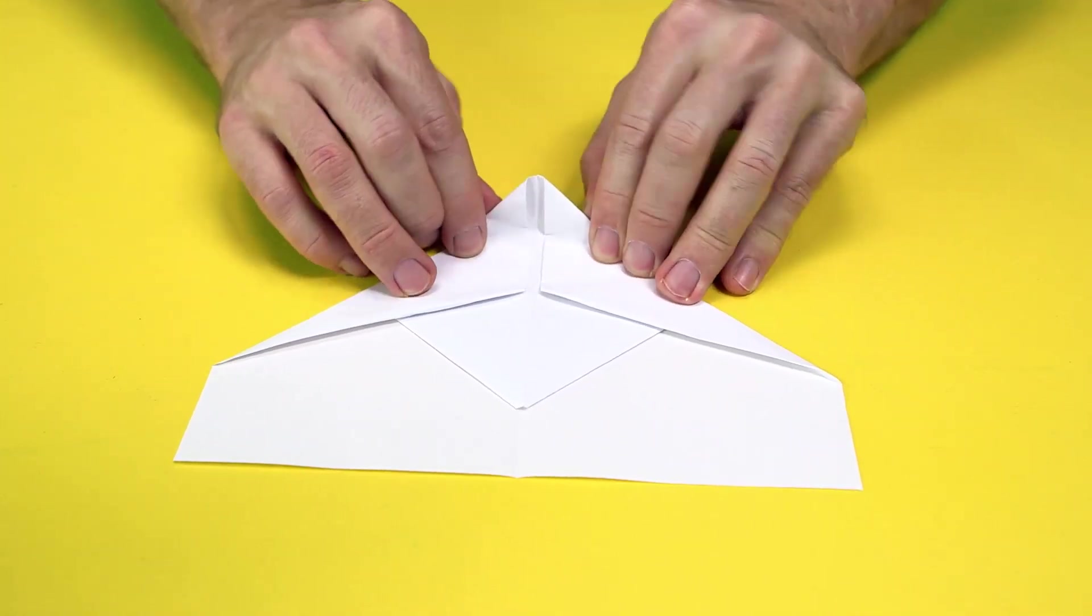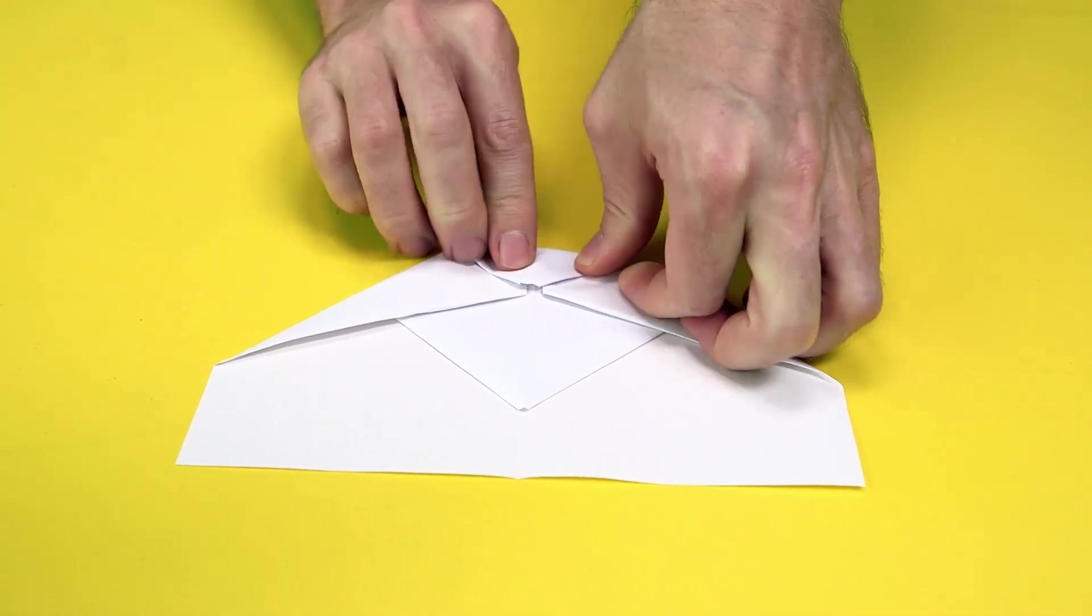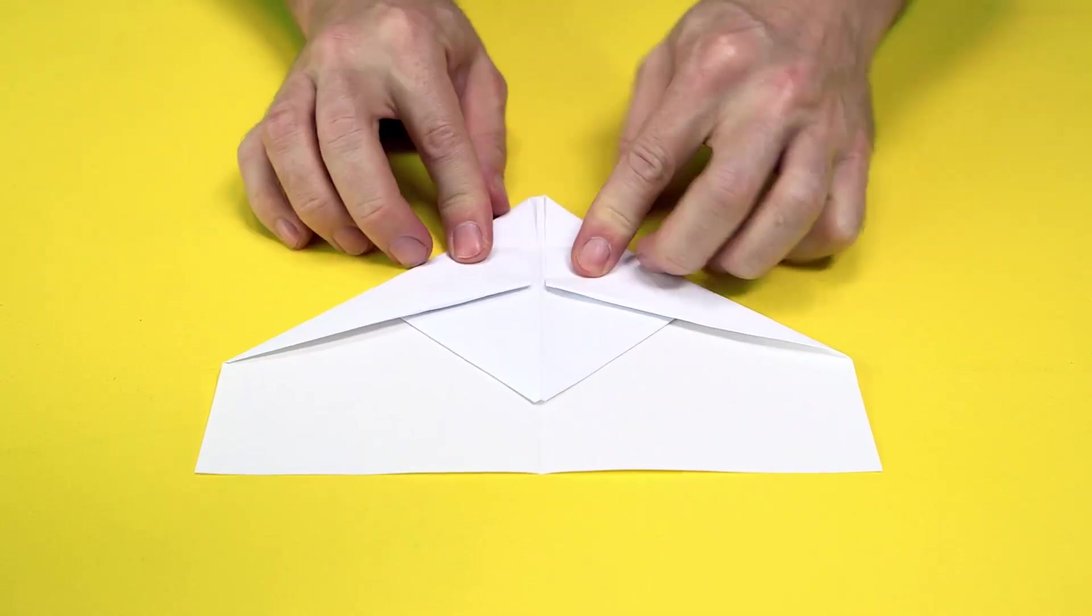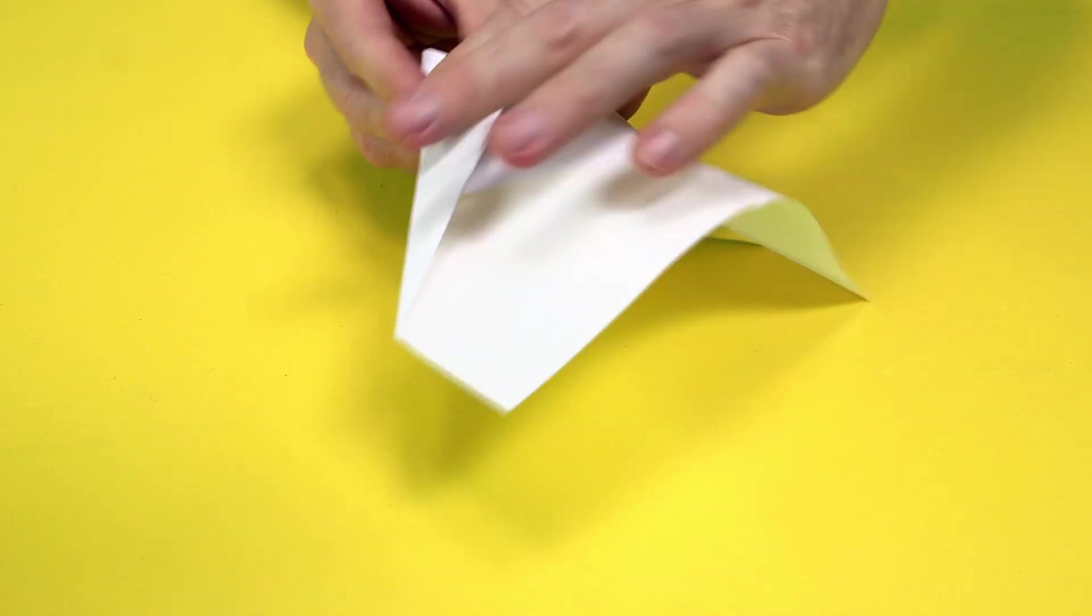And now we fold the point down to touch the edges right like that. And this is a guide fold, so do it very strong. Unfold it. Now, you fold it in half like this.